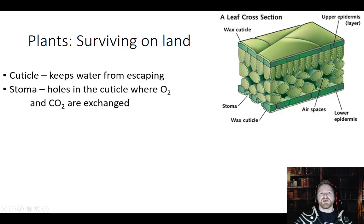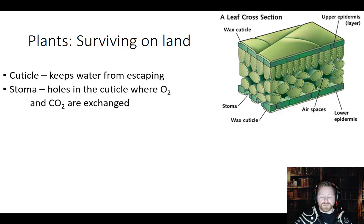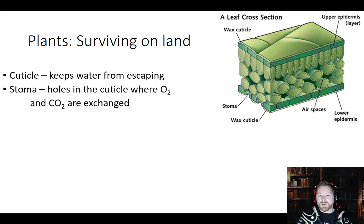Once plants close themselves up to keep water in, they realize they can't breathe. They need oxygen for cell respiration and CO2 for photosynthesis. So they had to create holes in that waxy coating. Those holes in the leaves are called stomata. They're not open all the time — some plants open them at night and close during the day, others the reverse — but it's all about gas exchange, and the stoma is how that happens.